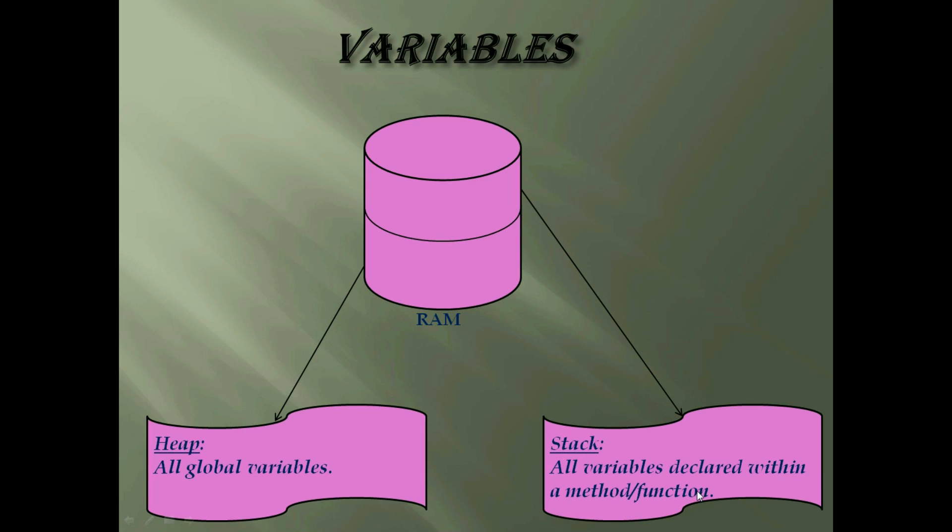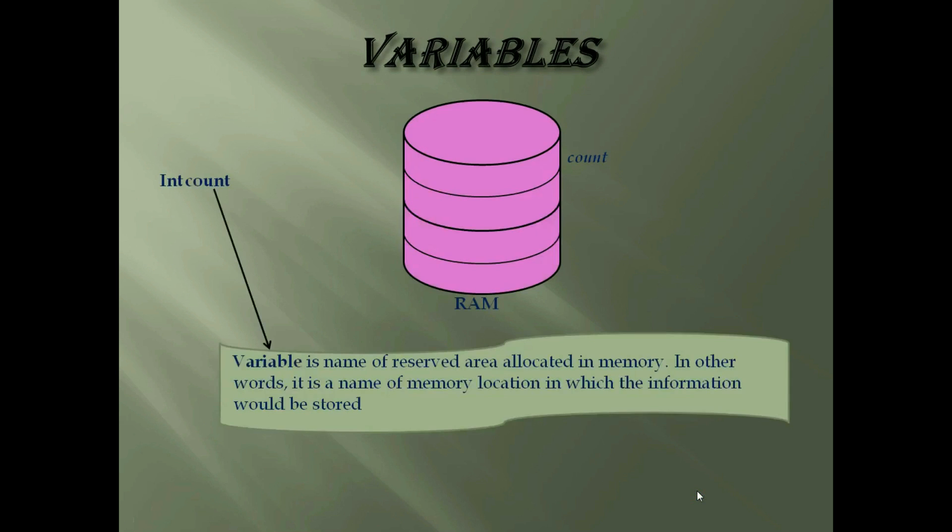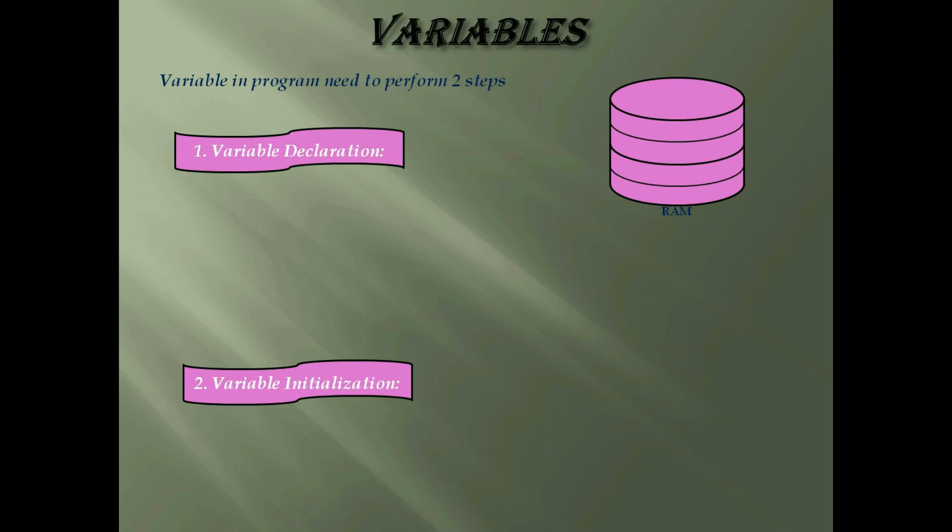Now, we will discuss what is a variable. Variable is name of reserved area allocated in memory. In other words, it is a name of memory location in which the information would be stored. And variables in the program need to perform two steps. First is variable declaration, and after declaration, we need to do variable initialization. To declare a variable, you must specify the data type and give the variable a unique name.